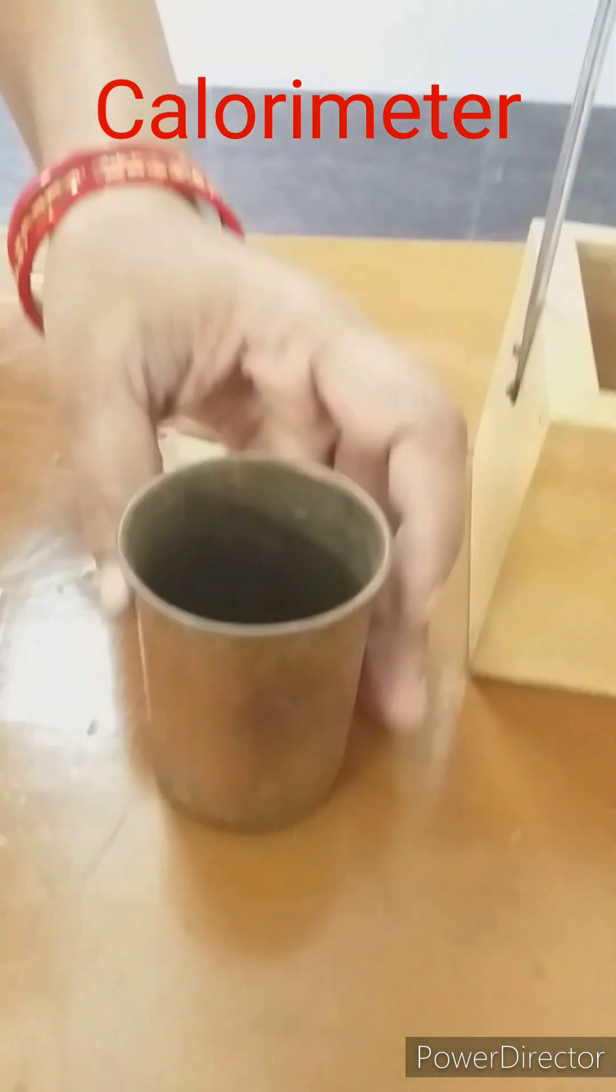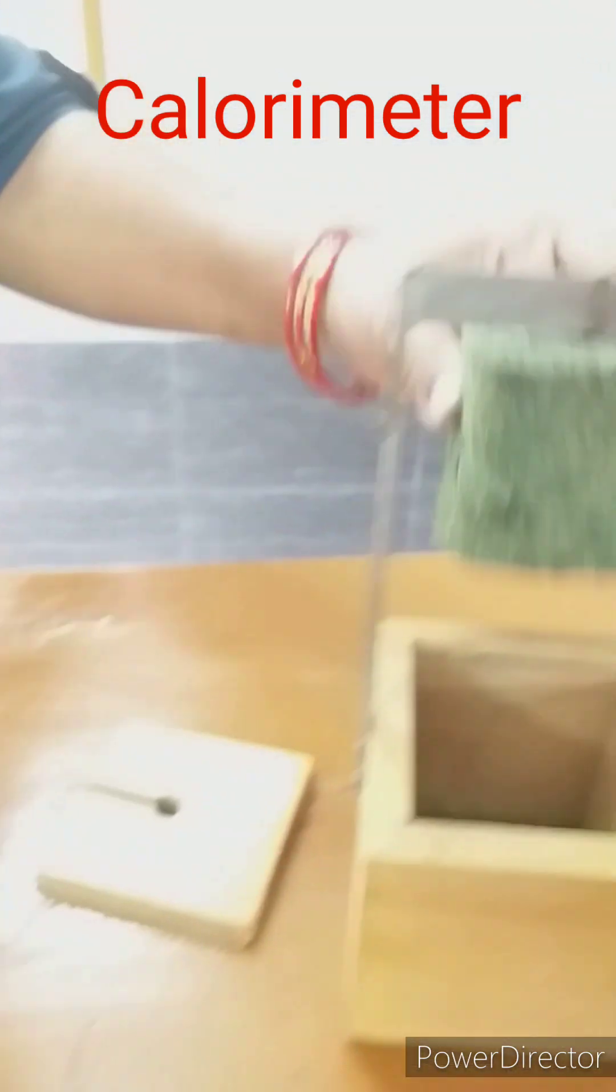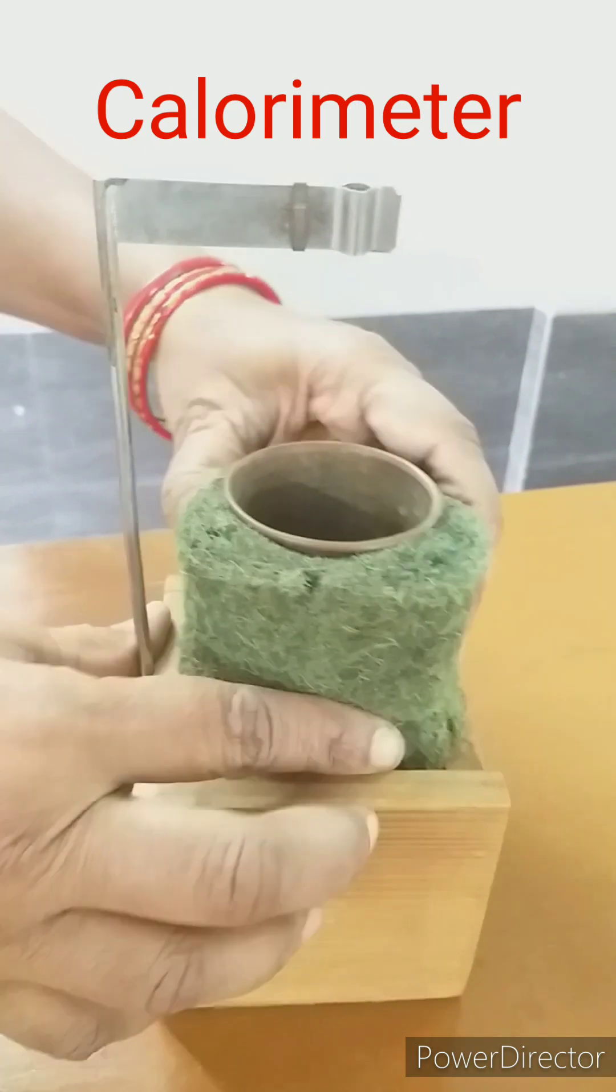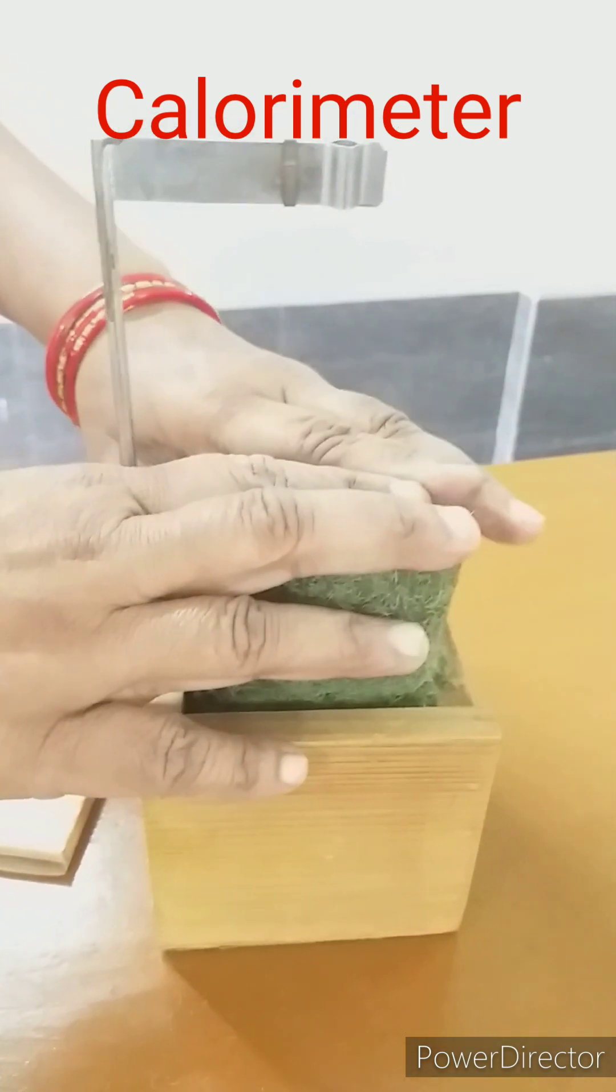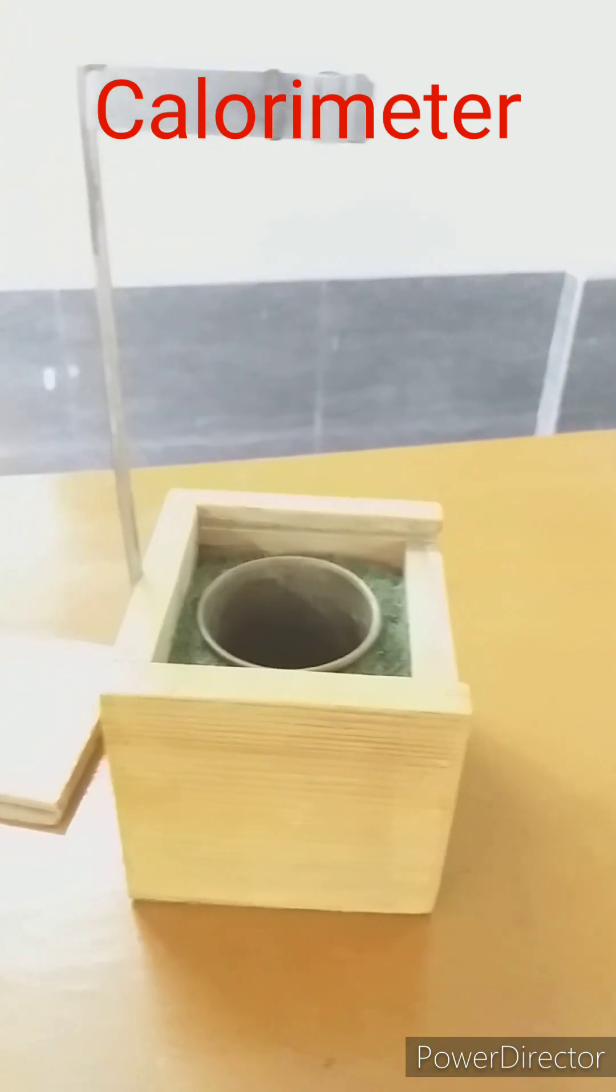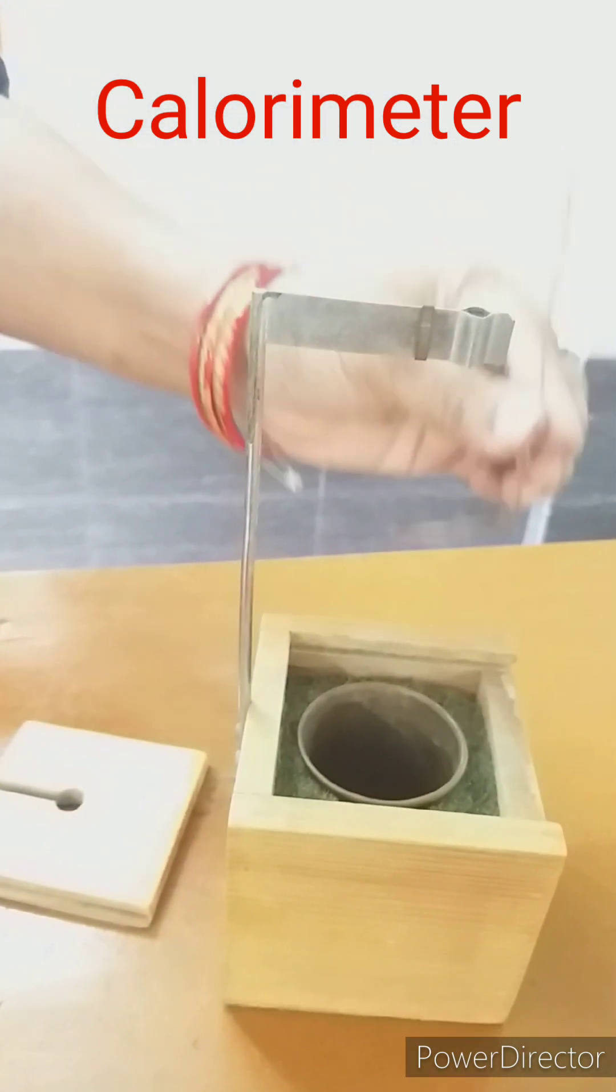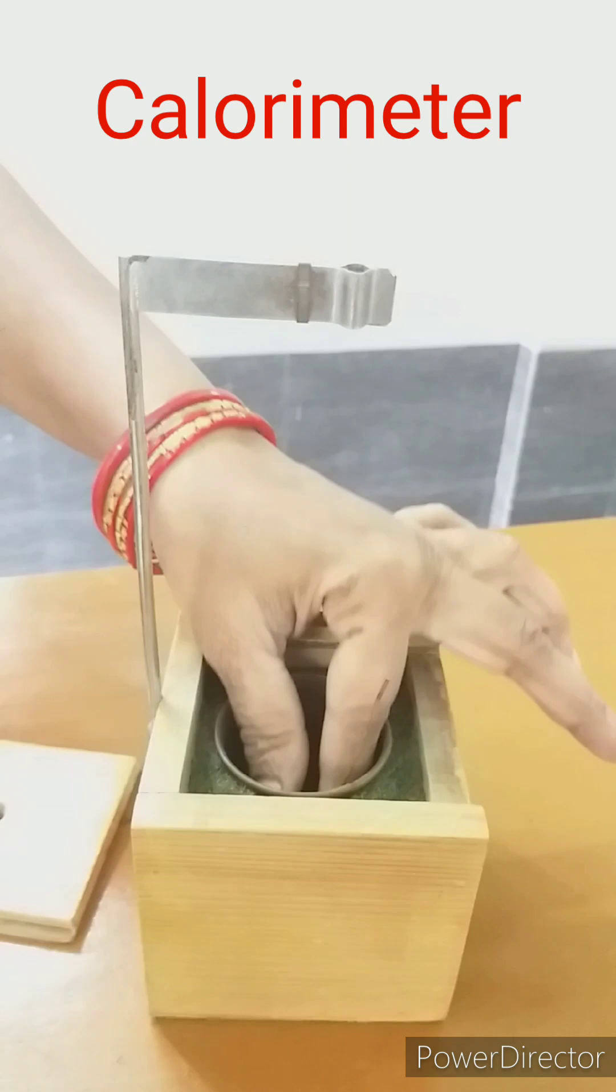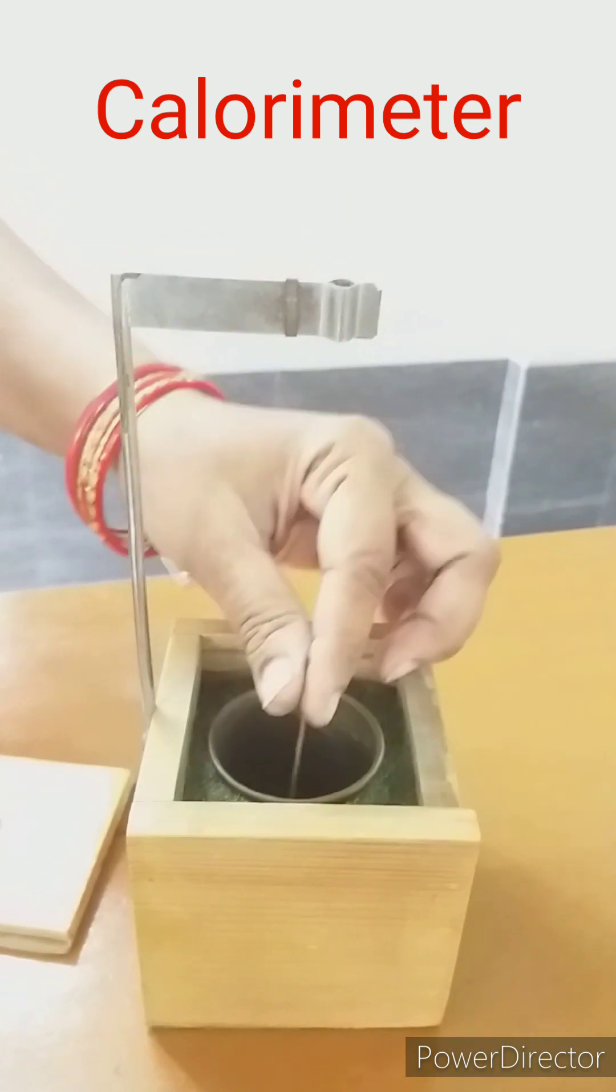Now let us keep this calorimeter inside a wooden jacket using an insulator. The space between the wooden jacket and the calorimeter should be filled with insulator so that heat loss by conduction can be prevented.